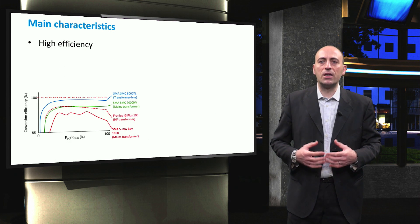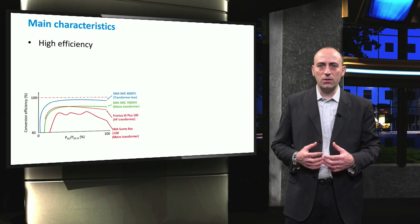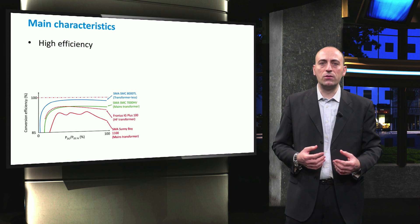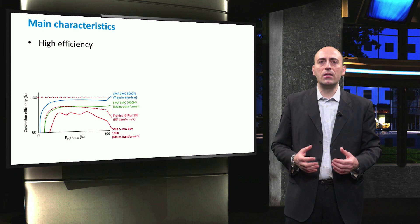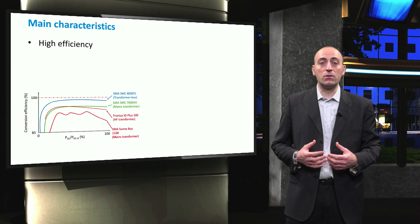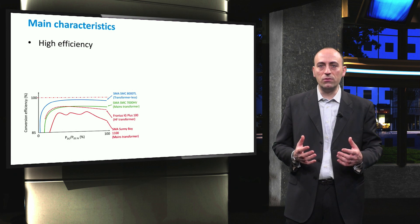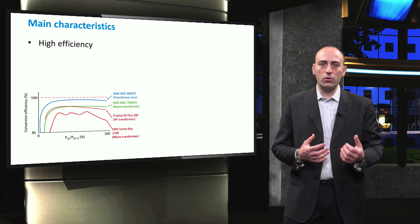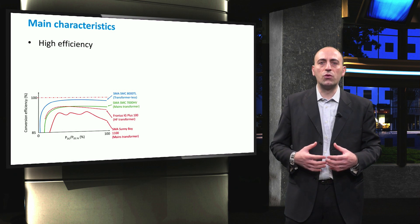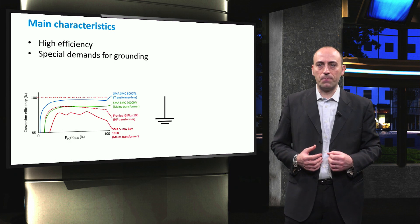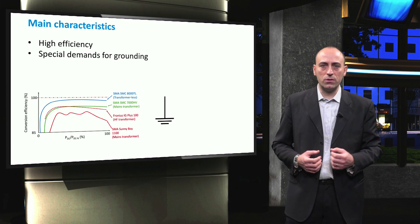Let's now see the main characteristics of a solar inverter, intended as the power electronic device that actually performs the conversion from direct current to alternate current. In general, an ideal solar inverter should fulfill the following requirements. First, it should be highly efficient because the owner of the solar system wants to maximize the utilization of the DC electricity generated by the PV modules when delivering it to the grid or to the AC loads. To meet this goal, we seek solutions that can ensure low losses. Sometimes, special demands about grounding need to be met. We will come back to this aspect at the end of this series of videos, when we will talk about potential induced degradation.